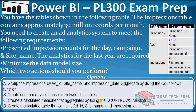The next option is to create one-to-many relationships between the tables. This also makes sense, as from the impressions table we need to create a one-to-many relationship towards the dimension tables. Then option C is to create a calculated measure that aggregates using the count rows function. Creating an additional measure will not reduce the model size, so this option will not help.